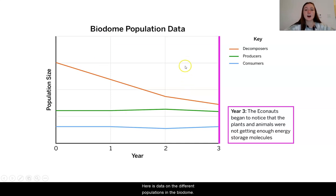Here is data on the different populations in the biodome. In orange, we have the decomposers. In green, the producers. In blue, the consumers. Notice that this graph shows what is happening over the first three years in the biodome.